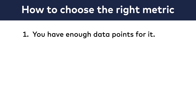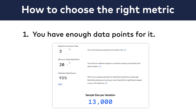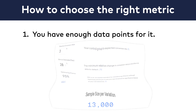It doesn't matter if you have 1 million visitors per month on your website. If you choose a metric for your A-B test that has only, let's say, 3 conversions per month, that's not a great metric, because you will never have enough data points to get statistically significant results. Just use the sample size calculators I showed you in the statistics module — with those, you can easily calculate whether your success metric has a high enough number of data points.